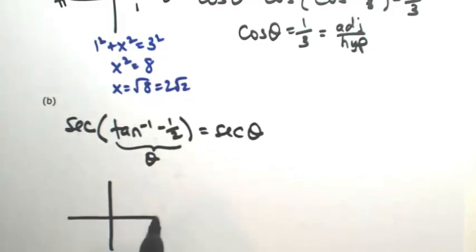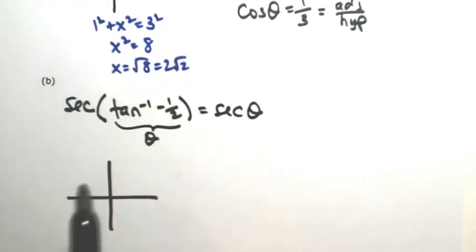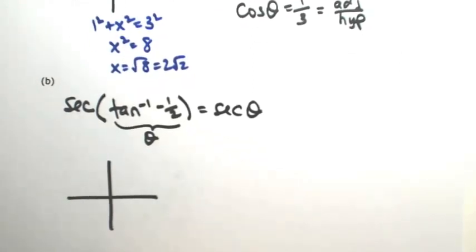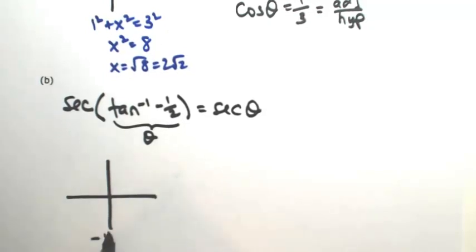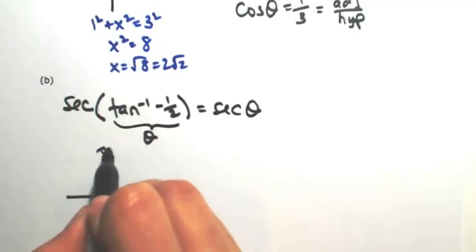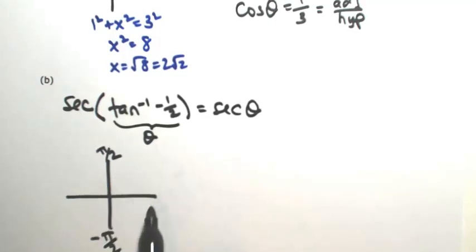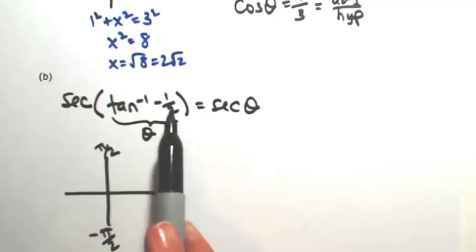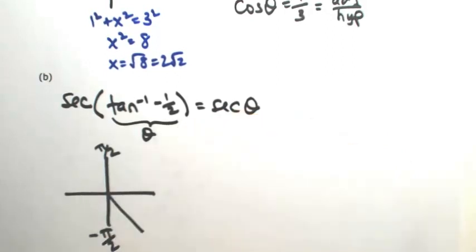So let me draw this angle in the appropriate quadrant. Keep in mind the restriction for inverse tangent. The restriction that we put on tangent was between negative pi over 2 and pi over 2. So it has to be either in the first or the fourth quadrant. Since this is negative, it's going to be in the fourth quadrant.